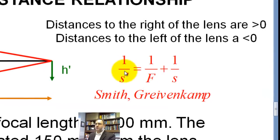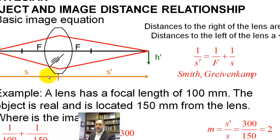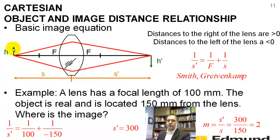The equation is one over S prime equals one over F plus one over S. Again, this is a Warren Smith or John Grievenkamp nomenclature. And if you have a real image, like is here, your S is negative.